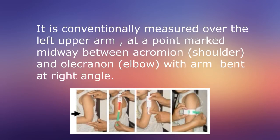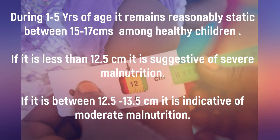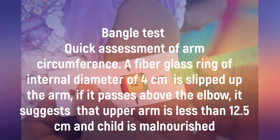Mid-Upper Arm Circumference (MUAC) is conventionally measured over the left upper arm, at the midpoint between the acromion and olecranon with the arm bent at a right angle. During 1–5 years of age it remains reasonably static between 15–17 cm in healthy children. Less than 12.5 cm is suggestive of severe malnutrition. Between 12.5–13.5 cm indicates moderate malnutrition. Bangle Test: a fiberglass ring of internal diameter 4 cm is slipped up the arm — if it passes above the elbow, it suggests the upper arm is less than 12.5 cm and the child is malnourished.